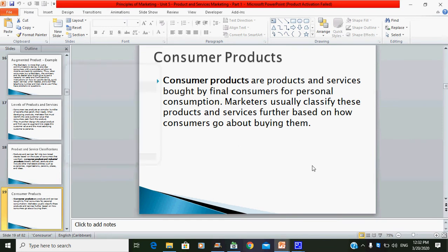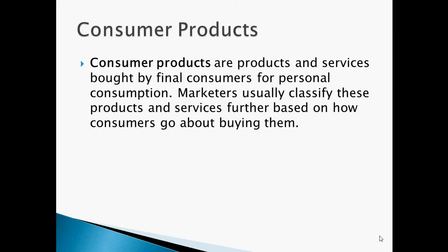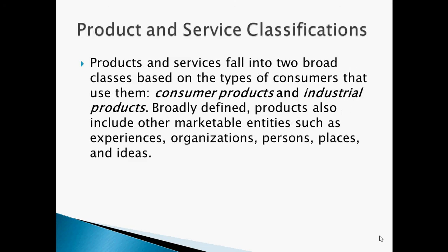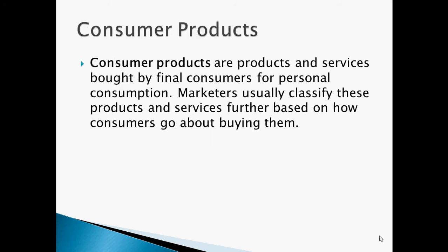We have different classes of products: consumer products and industrial products. Consumer products are products and services bought by final consumers for personal consumption. Marketers usually classify these products and services further based on how consumers go about buying them.